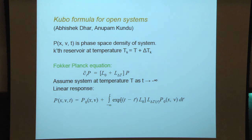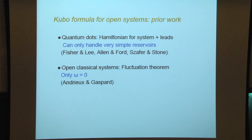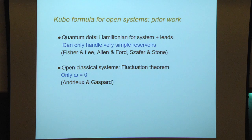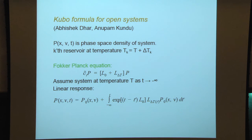So what I've tried to do is motivate the need for such a proof. The first part of this work was done with Abhishek Dhar and Anupam Kundu — a Kubo formula for open, again, classical systems. The way it works is you work with a Fokker-Planck equation: P(x,v,t) is the phase space density of the system. Suppose it's connected to a bunch of reservoirs, and the kth reservoir is at a temperature slightly away from T by delta T_k.